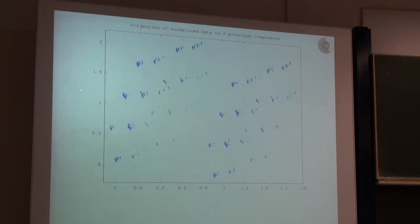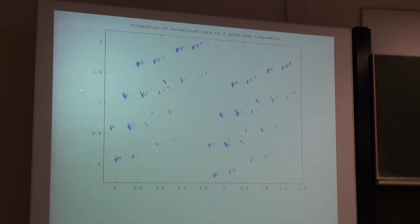But if we look at the normalized values — that's the picture students showed me — when you normalize your data, calculate the eigenvectors of the covariance matrix, and project on the two largest eigenvectors, you get a highly structured picture.